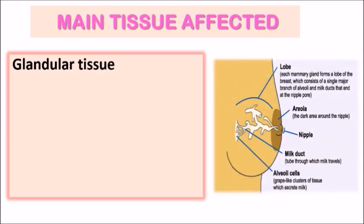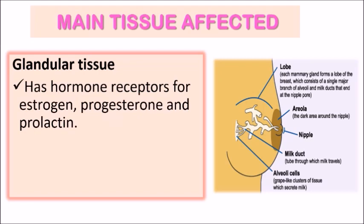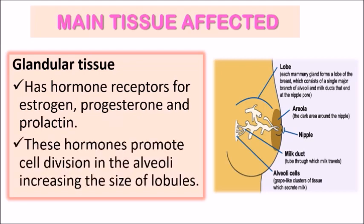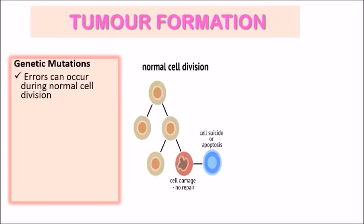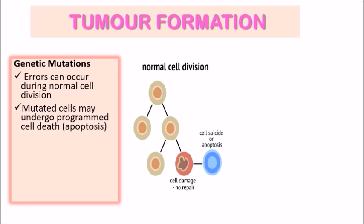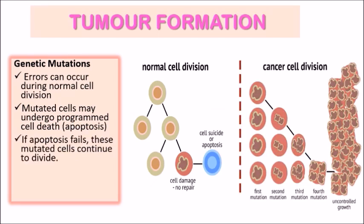Breast cancer primarily affects the glandular tissue. This tissue is composed of cells with special hormone receptors for the common female hormones: estrogen, progesterone, and prolactin. These hormones are responsible for promoting cellular growth of alveolar cells found in the milk lobules of the breast, leading to enlargement of these lobules. If these alveolar cells undergo genetic mutations during cell division, this can lead to the formation of tumors. Normally mutated cells may be programmed to die, but if that fails, tumors form as the cells continue to grow uncontrollably — this is the basis of any cancer development.